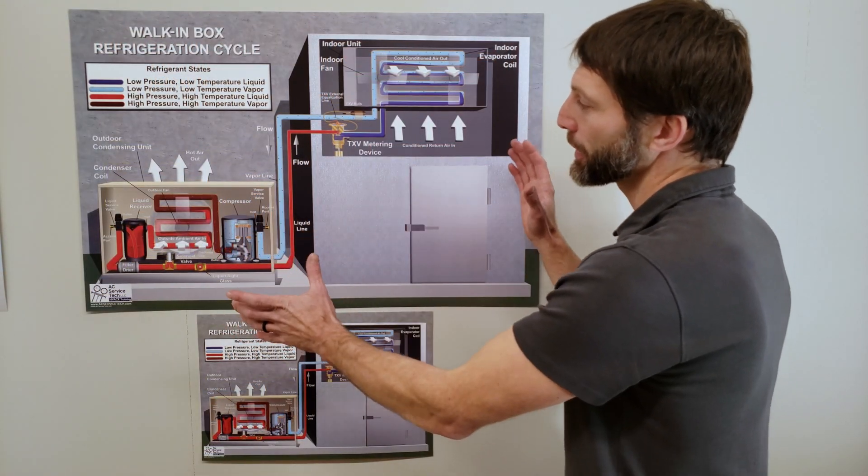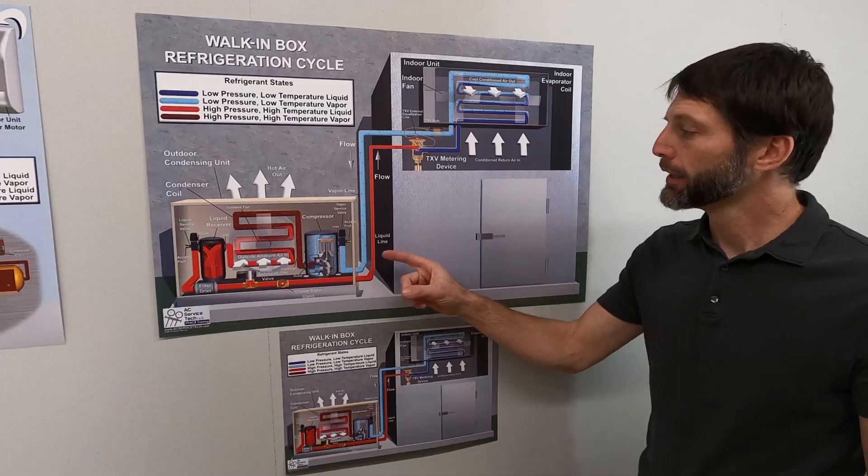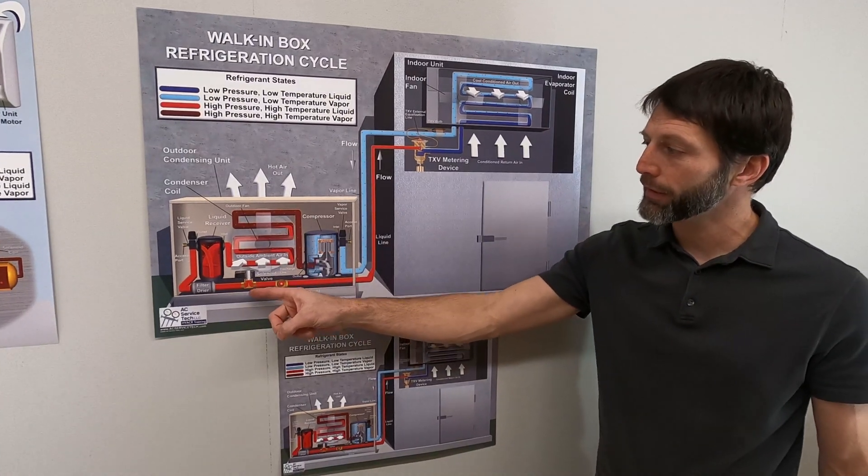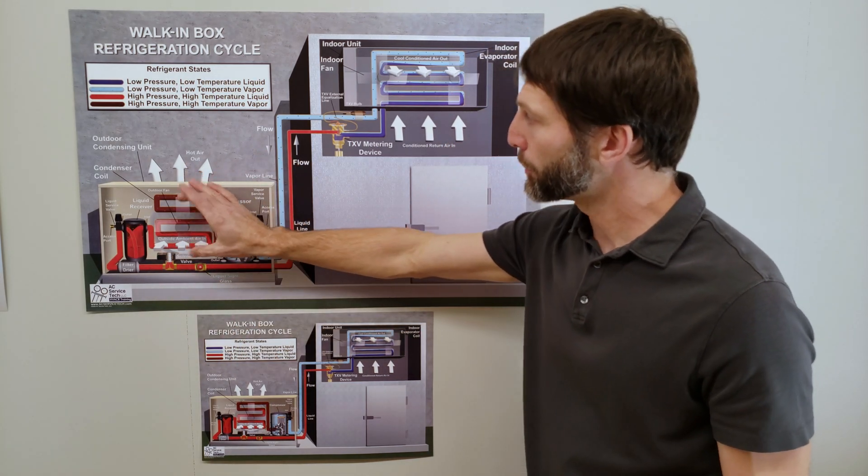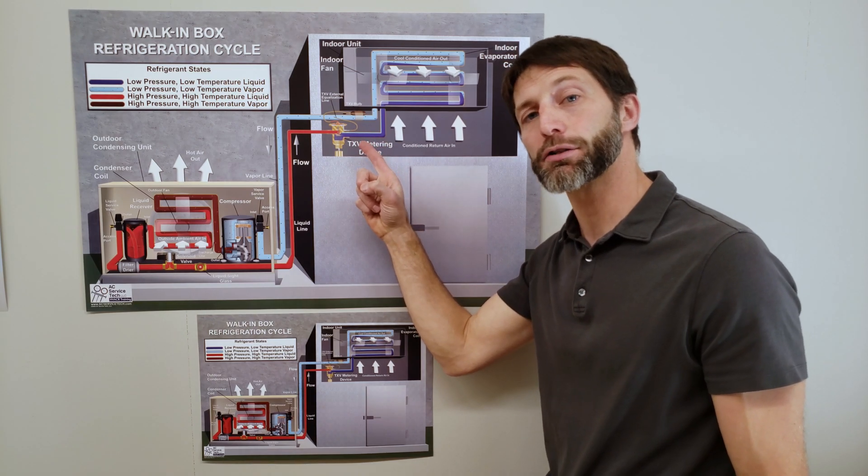Here's the refrigeration cycle of a walk-in box. This is an automatic pump down refrigeration unit. You have an opened up reciprocating compressor, your liquid line sight glass, your solenoid valve filter dryer, your liquid receiver tank, your condenser coil, your evaporator coil, and an adjustable thermostatic expansion valve.